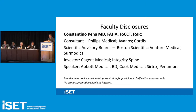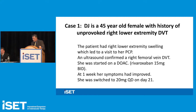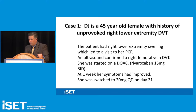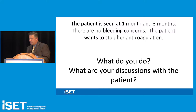Case 1: DJ is a 45-year-old female with a history of unprovoked right lower extremity DVT. She presented with right lower extremity swelling; ultrasound confirmed right femoral vein DVT. She was started on rivaroxaban 15 mg twice a day. At one week, her symptoms improved. She was switched to 20 mg once daily after day 21. At three months, there are no bleeding concerns, but the patient wants to stop her anticoagulation. What do you do?